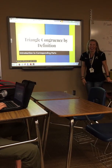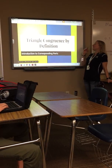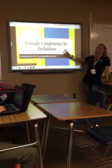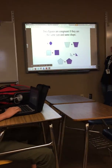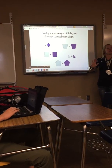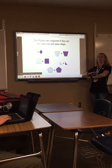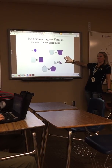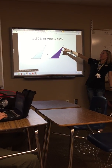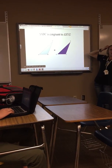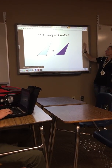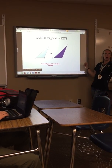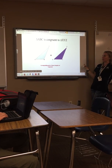Hi! Today we're going to learn about proving triangles congruent by definition of congruent triangles. Two figures are congruent to each other if they have the exact same size and shape. Triangle ABC is congruent to triangle XYZ, and when triangles are congruent to each other, their corresponding parts are congruent as well.